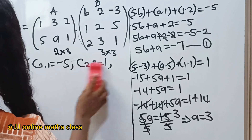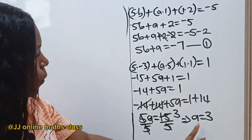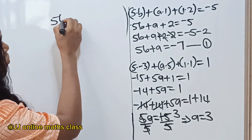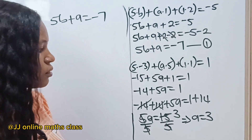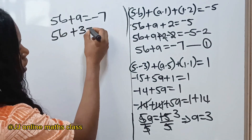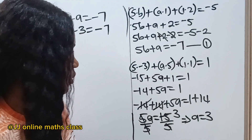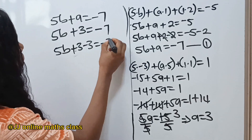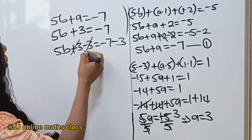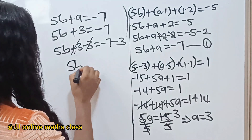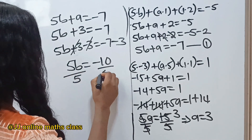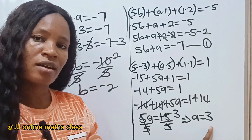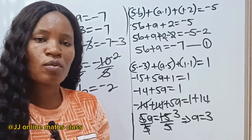Now we have a = 3. Let's substitute into Equation 1: 5b + a = -7, so 5b + 3 = -7. Subtracting 3 from both sides gives 5b = -10. Dividing both sides by 5, we get b = -2. Therefore, a = 3 and b = -2. Thank you so much for watching and have a great day.